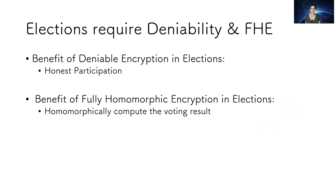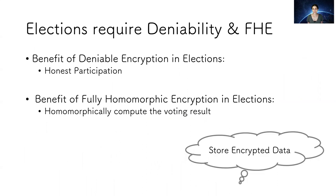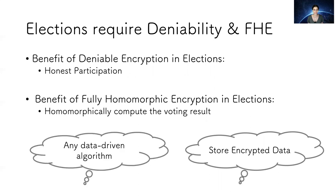Elections require both deniability and homomorphism. Deniability to guarantee honest participation so that nobody will be able to buy votes, and homomorphism so we can compute the voting results homomorphically. This is true whenever we store encrypted data in the cloud — we usually want not just deniability, but also the ability to compute on it. And this is also true in any data-driven algorithm.